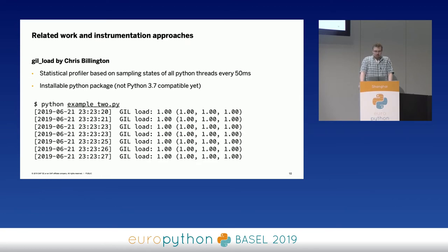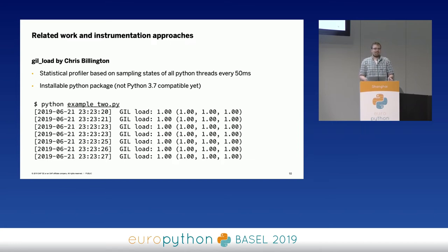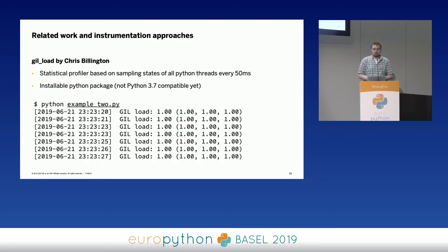There's a newer implementation called GIL-load, which is quite interesting because it's a profiler you can easily integrate into your existing Python application. During runtime it prints out a load number — comparable to the load of a Linux system. The problem is, at the end you only have a number. You don't know what the root cause is. If I run it on an application heavily bound to the GIL, I just get the information 'yes, you have a problem,' with no other information on how to solve it.